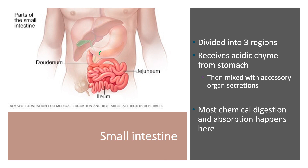The small intestine will receive the acidic chyme from the stomach via the pyloric sphincter, and here we're going to add in secretions from accessory organs. For example, the gallbladder adds bile to help with the breakdown of fats. Most chemical digestion and absorption happens within the small intestine — breakdown of macromolecules and absorption of nutrients, water, and electrolytes. After the small intestine, we see absorption of only water and salt, not nutrients.